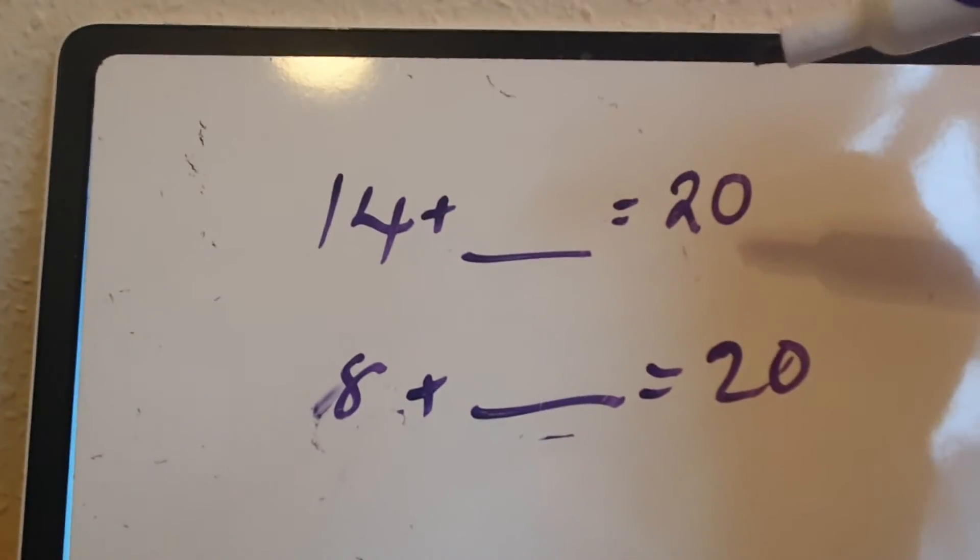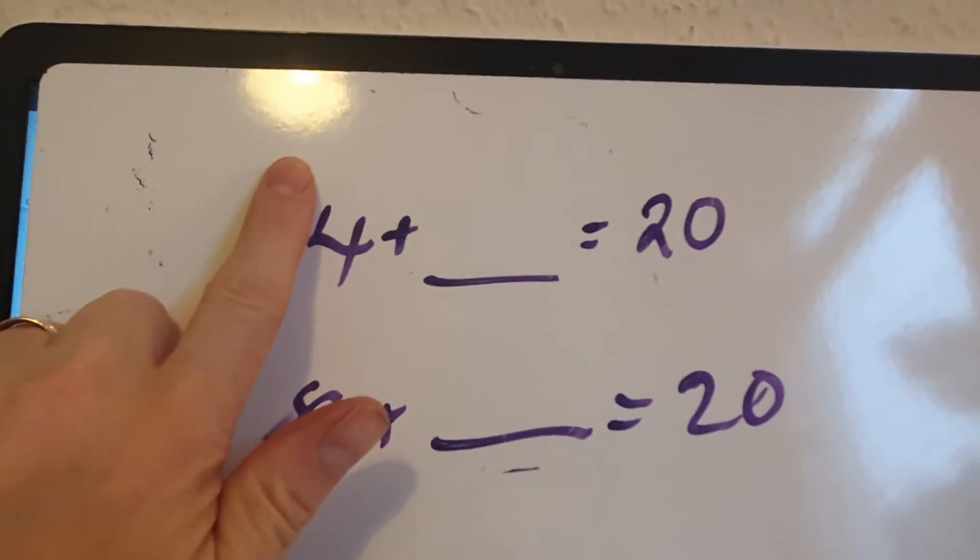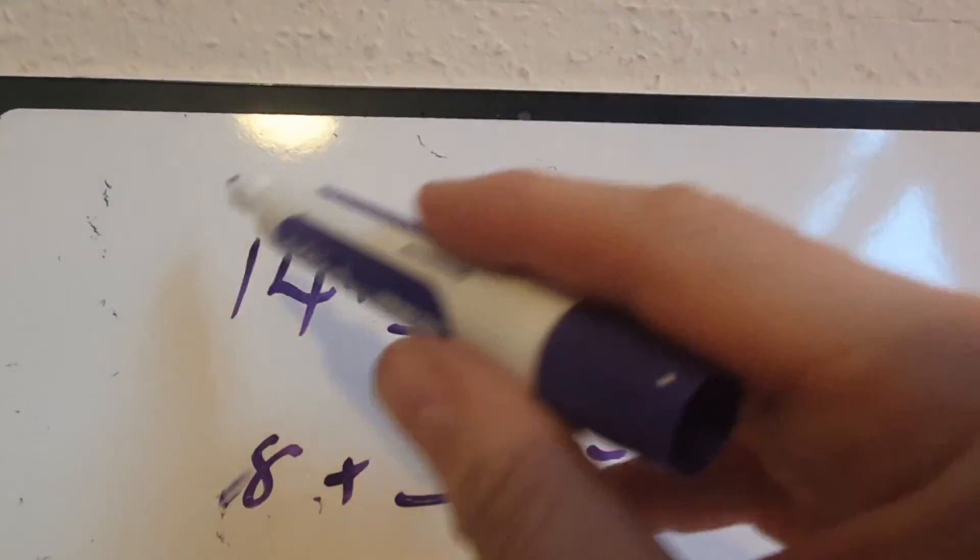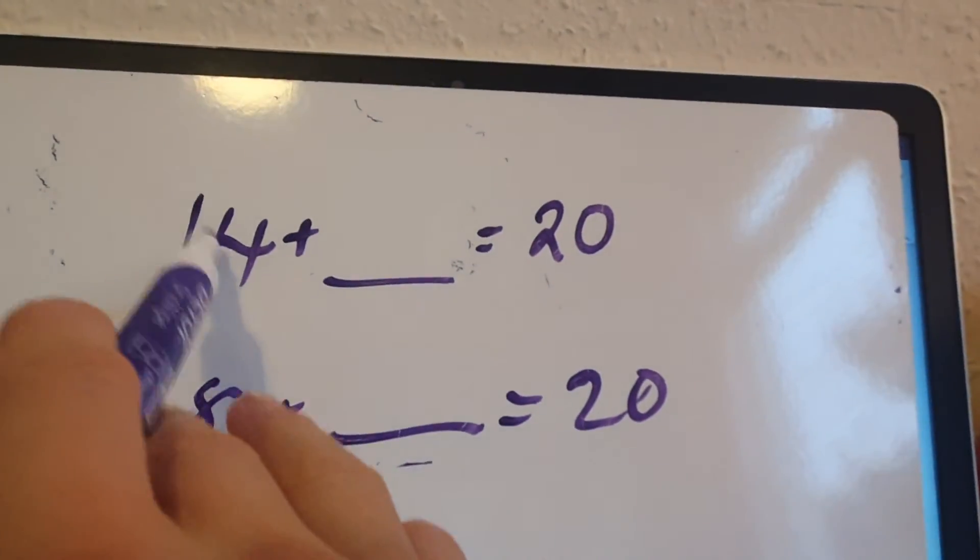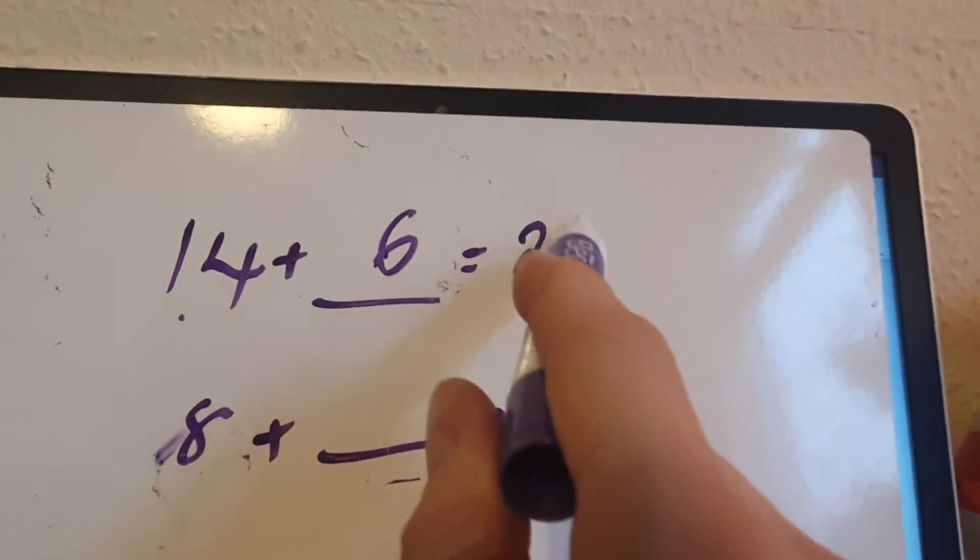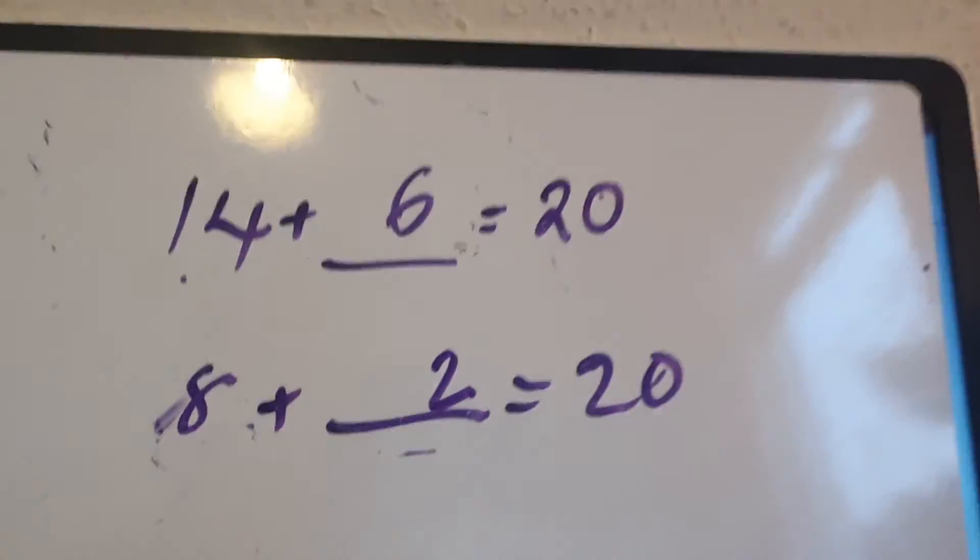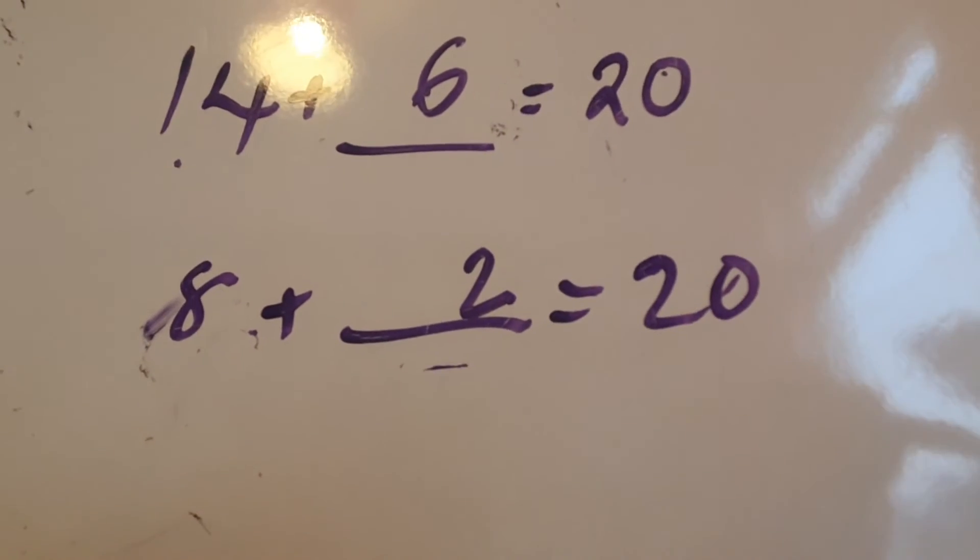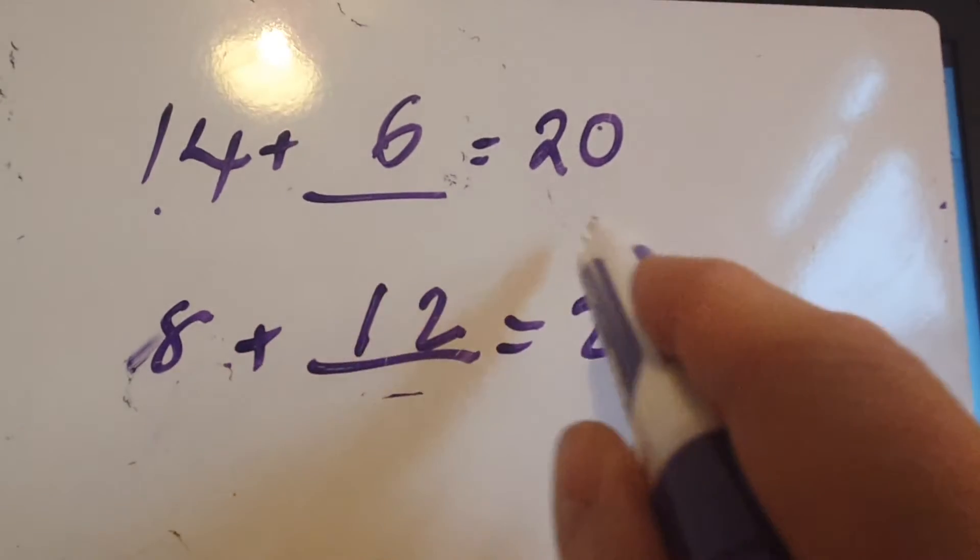And then just building up to 20. We did that last week, using our number bonds of 10. 14 add something is 20. Well, we know 4 add what is 10. 4 add 6. So we know 4 add 6 is 10, and add that 10. So we know we've got 14. Now we know 4 add 6 is 10, so therefore 14 add 6 is 20. And this one here: 8 add something is 20. Well, we know 8 add 2 is 10, but we need to get to 20. So 10 add what is 20? 10 add 10. So 8 add 2 is 10, add 10 equals 20.